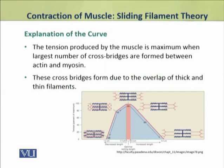The tension produced by the muscles is maximum when the largest number of cross bridges are formed between actin and myosin. These cross bridges form due to the overlap of thick and thin filaments.